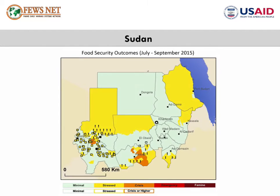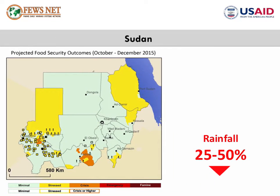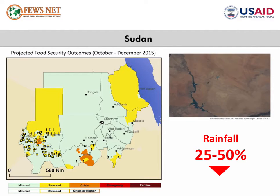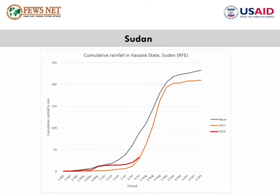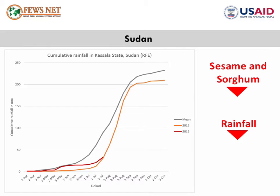In Sudan, food security improved this year compared to last year due to the availability of the 2014–2015 surplus production and below-average staple food prices. The situation is expected to deteriorate in September as the lean season peaks, then improve from October to December when the new harvests arrive. Early season rainfall was 25 to 50 percent below average in main production areas. This graph from Kassala State shows how rainfall so far this year is below the mean and tracking close to 2013, a below-average production year. Harvests are likely to be below average, but carryover stocks from last year's exceptionally good season may help fill shortfalls.